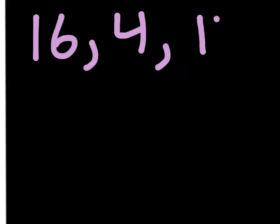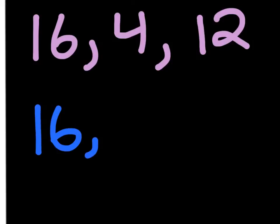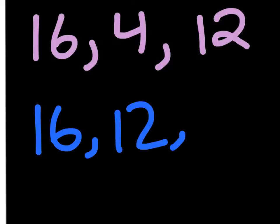Now if I ask you to order 16, 4, and 12 from greatest to least, you would first find the greatest number, which is the highest number, which would be 16. So 16 is first in the order. Then you would find the second highest number, which is 12, so 12 would be second. And then you would find the lowest number, which is also the third highest number, so 4 would be the last number in the order.